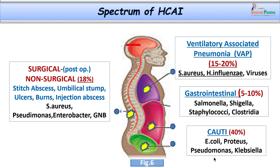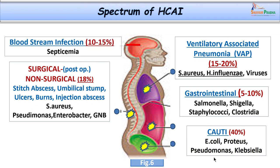Organisms causing wound infections include Staphylococcus aureus especially MRSA — methicillin resistant Staphylococcus aureus — Pseudomonas, Enterobacteriaceae, and other gram negative bacteria, as they can be part of endogenous sources. The next group is bloodstream infections, contributing up to 10 to 15 percent, including bacteremia and septicemia.